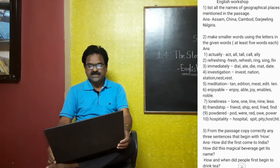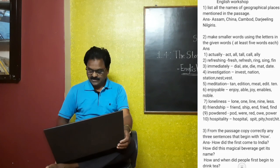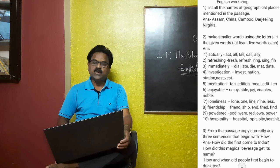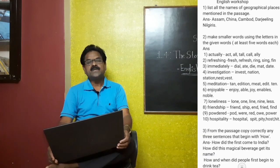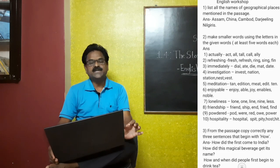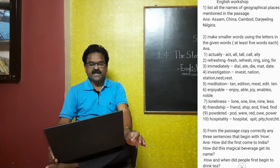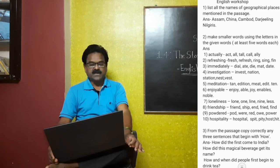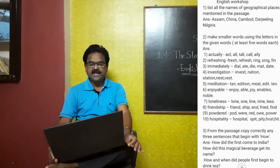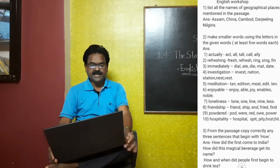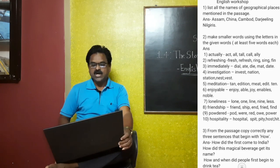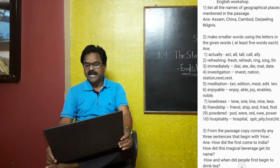Question two: make smaller words using the letters in the given words, at least five words each. From 'plantation': act on, tall, call, early. From 'refreshing': fresh, refresh, ring, sing. From 'immediately': dial, aid, die, mete, date. From 'investigation': invest, nation, tension, nest, east. From 'meditation': ten, edition, meditate. From 'enjoyable': joy, enable, noble. From 'loneliness': loan, one, line, nine, lace. From 'friendship': friend, find. From 'powdered': power, red. From 'hospitality': hospital, pity, host, heat.